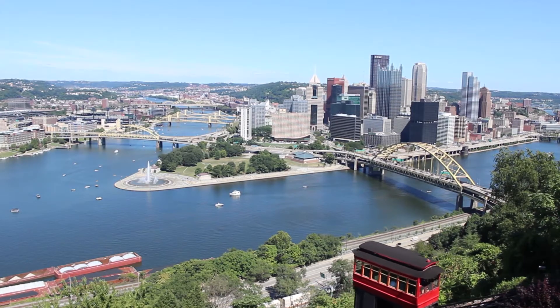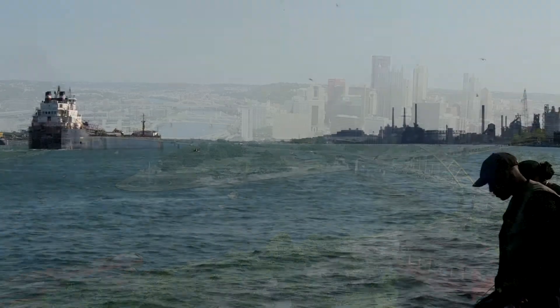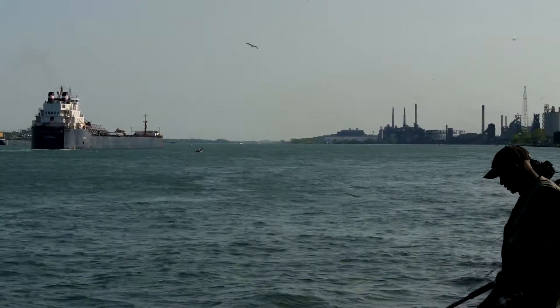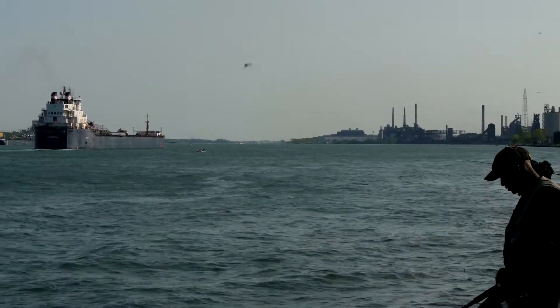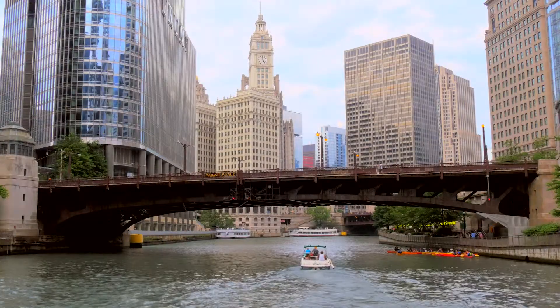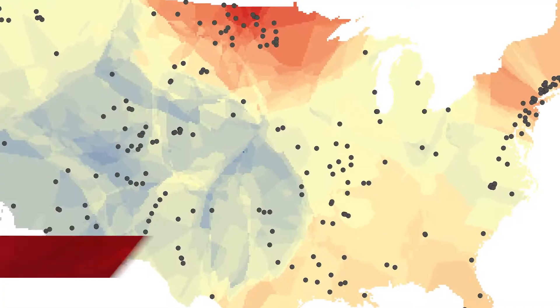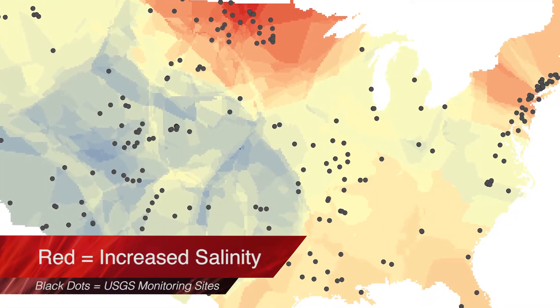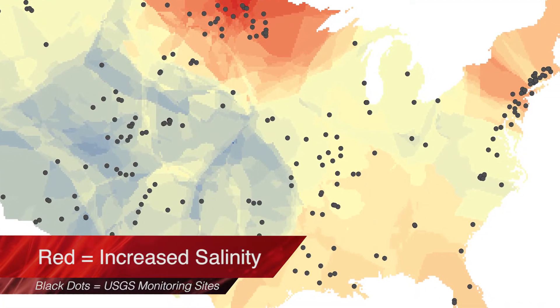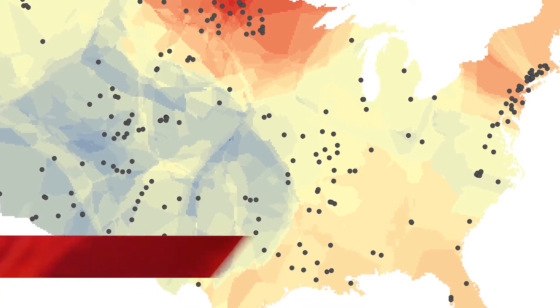This isn't an isolated case just in Flint, Michigan. Our study looked at the salinization and alkalinization of fresh water on the North American continent, and we realized there's what we call a freshwater salinization syndrome that's contributing to the increase in these multiple salts.